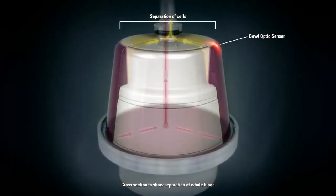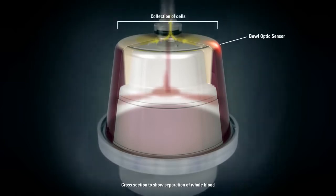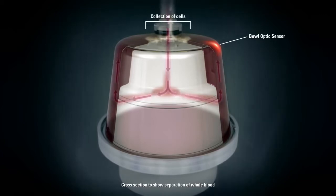When the whole blood process target has been reached, the collection of the harvested cells is triggered. This process begins by collecting a small amount of additional whole blood from the patient which pushes the layer of red blood cells up and displaces the concentrated leukocyte fraction out of the top of the centrifuge with minimal RBC contamination.